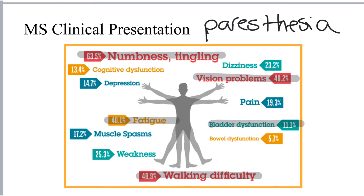More often than not, the initial exacerbation or flare of MS will present with one of those symptoms. There are other signs that may occur either at initial presentation or at some point later in the disease course during a subsequent flare, and these are things like abnormal gait, sexual dysfunction, vertigo or dizziness, impaired speech, muscle spasms or weakness, and cognitive dysfunction.